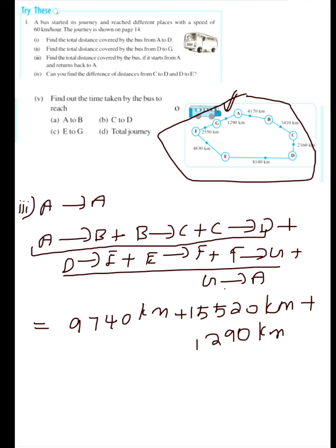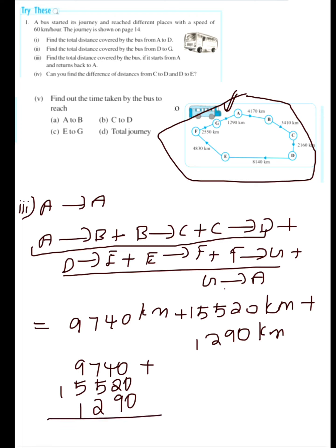Now add all three: 9740 plus 15,520 plus 1290. Keep in mind the place values — ones, tens, hundreds, etc. Adding: 0, carry 1, 5, carry 1, 5, carry 1, 6, carry 1 — so the total is 26,550 km. The total distance covered by the bus if it starts from A and returns back to A equals 26,550 km.